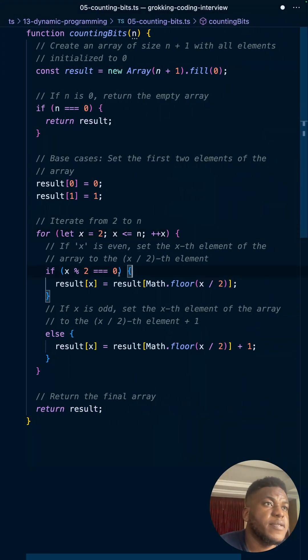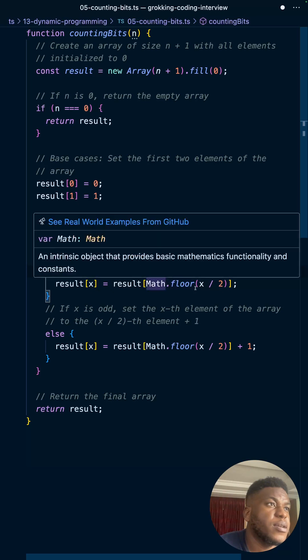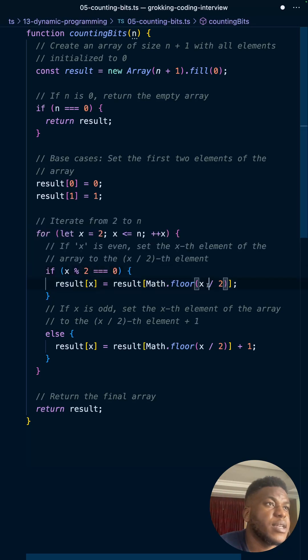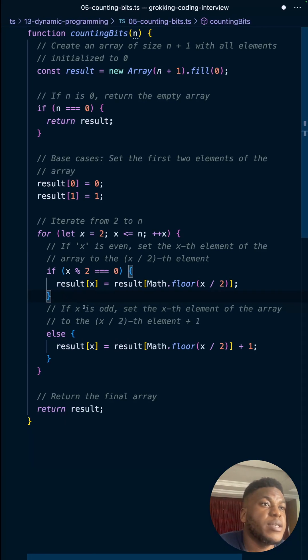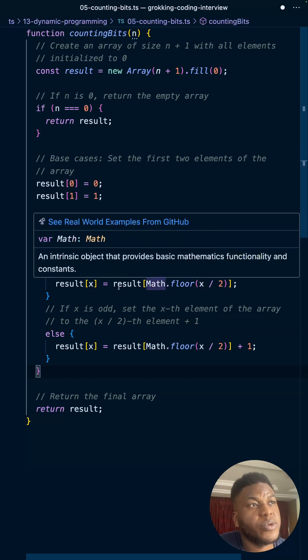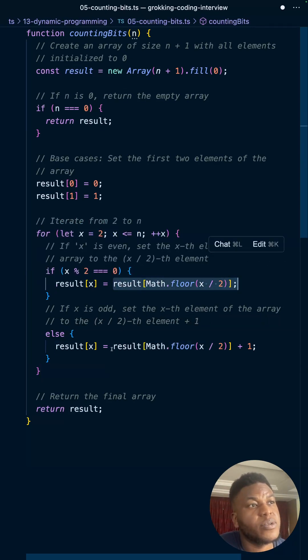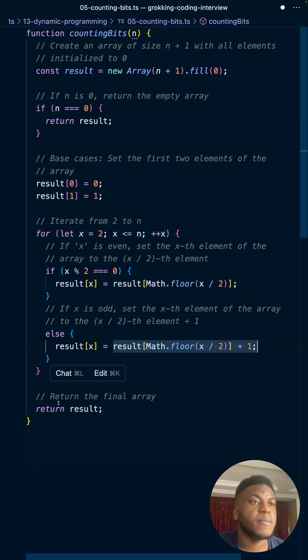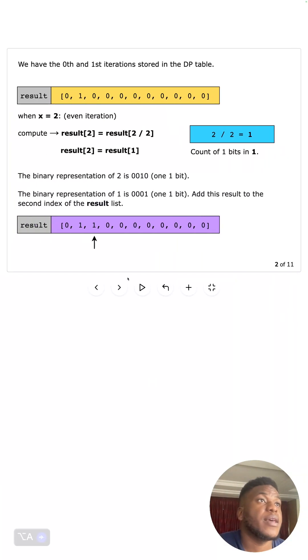If it's even, pick whatever is indexed at half of that position and set it. Otherwise, if it's odd, pick what is at half of that position and add one to it. It's dynamic programming because we're using previous solutions to compute future solutions, as you can see here. Then we return the final result array.